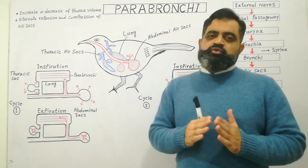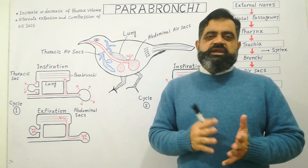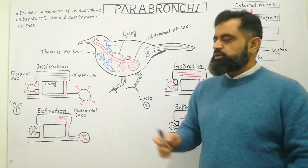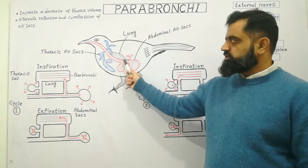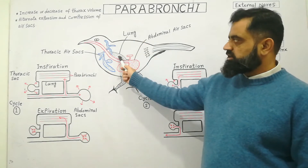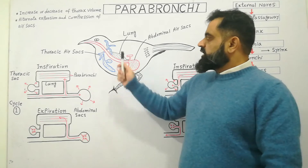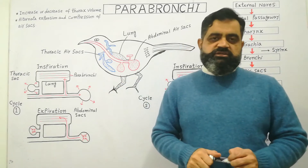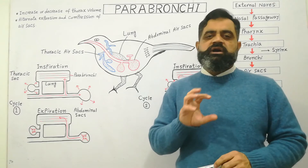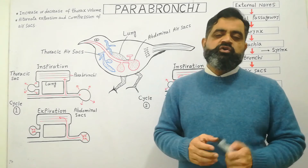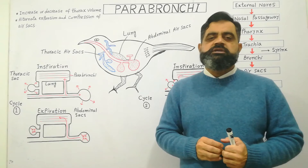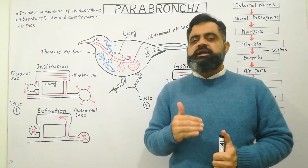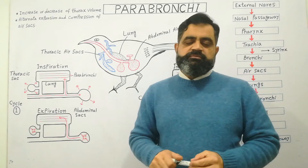The trachea divides into two bronchi — left bronchus and right bronchus — which lead into the left lung and right lung. There are two lungs present in the thoracic cavity, shown in black in this diagram. These lungs contain small tube-like structures known as parabronchi. Unlike other bronchi in the animal kingdom, these bronchi are open on both sides — air enters from one side and moves out of the other side.